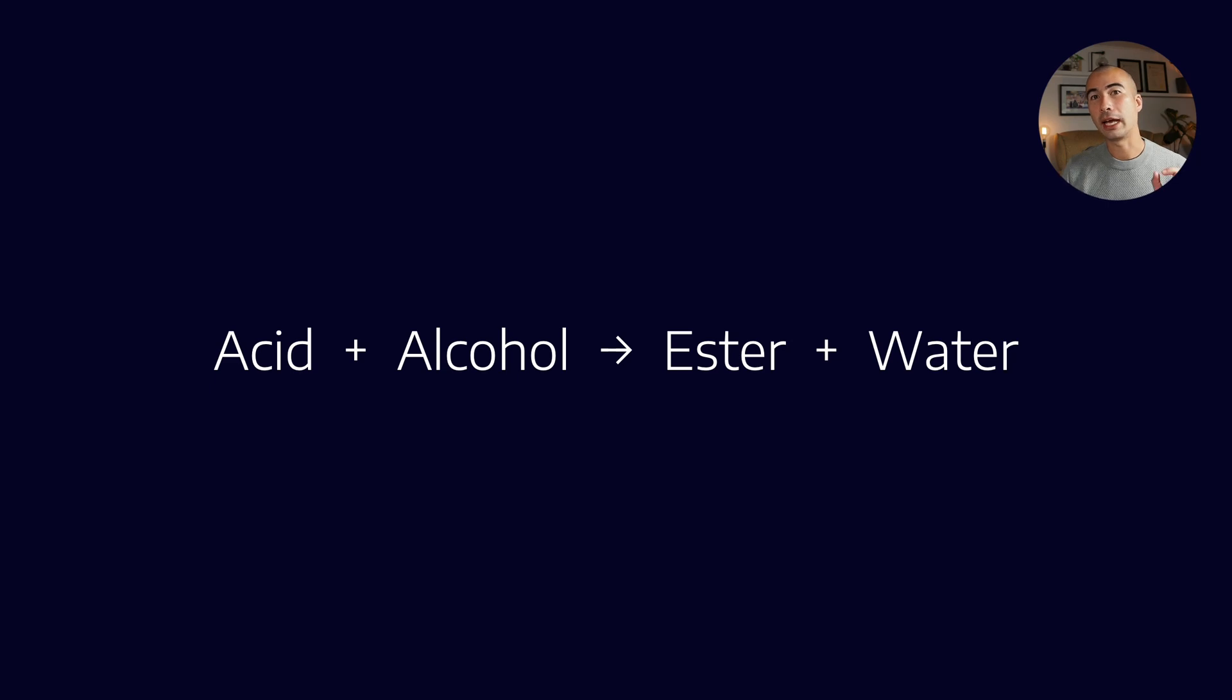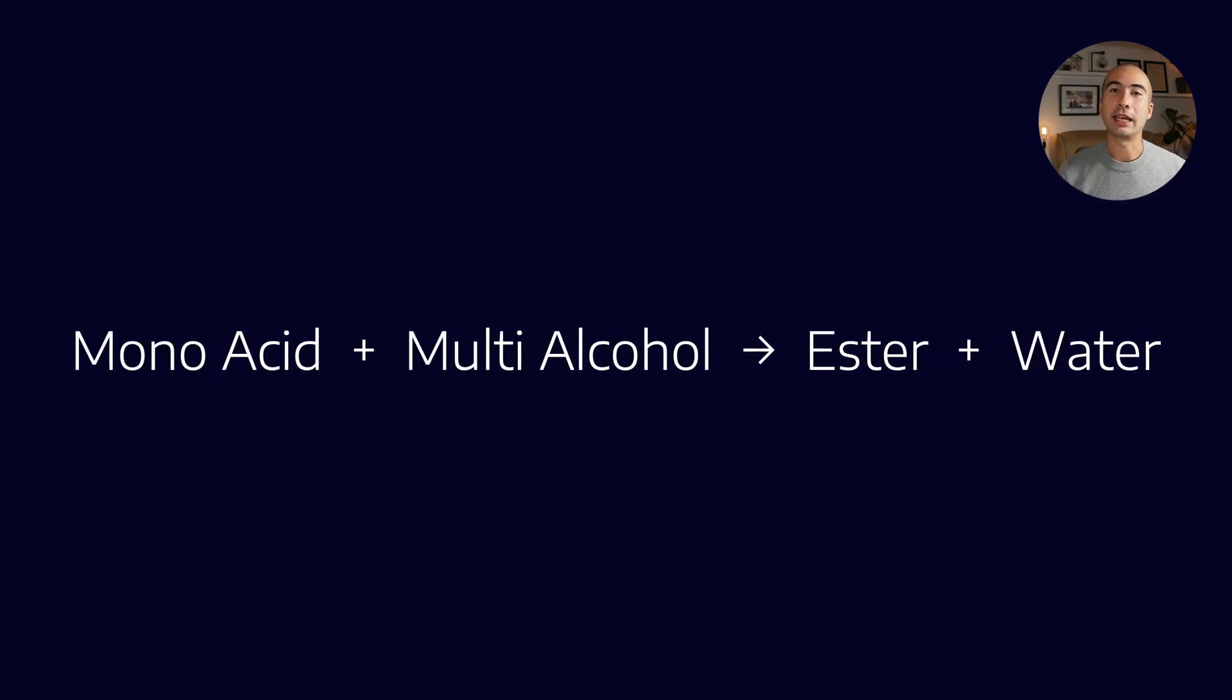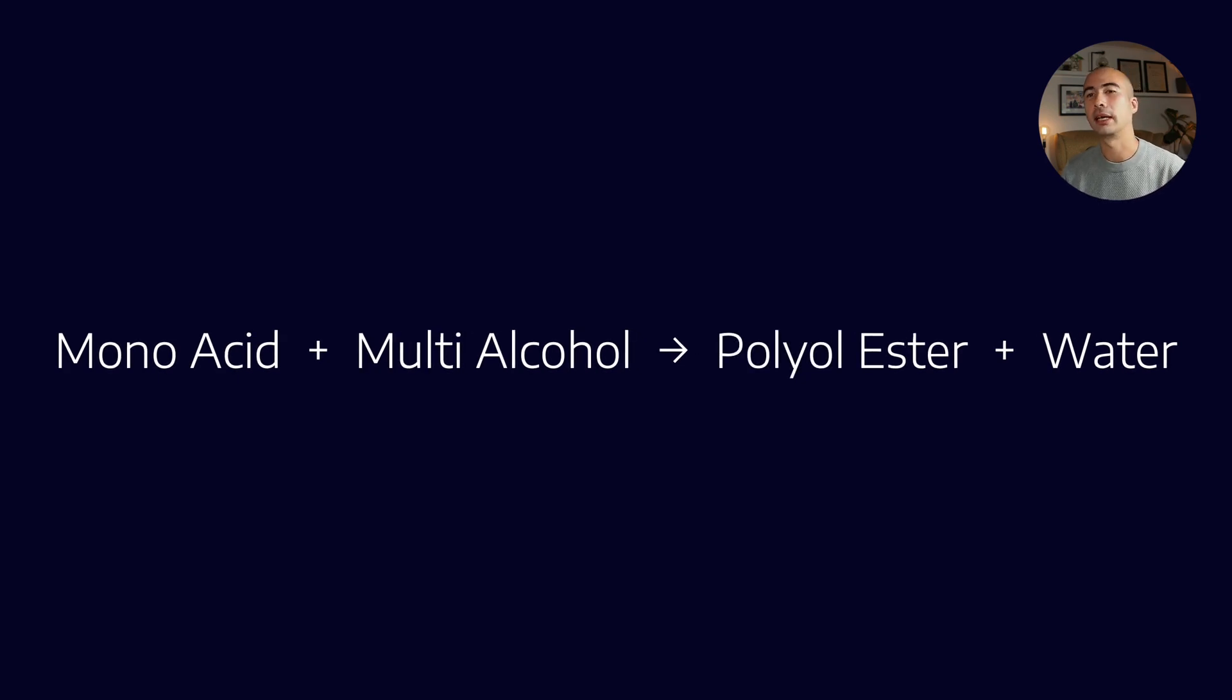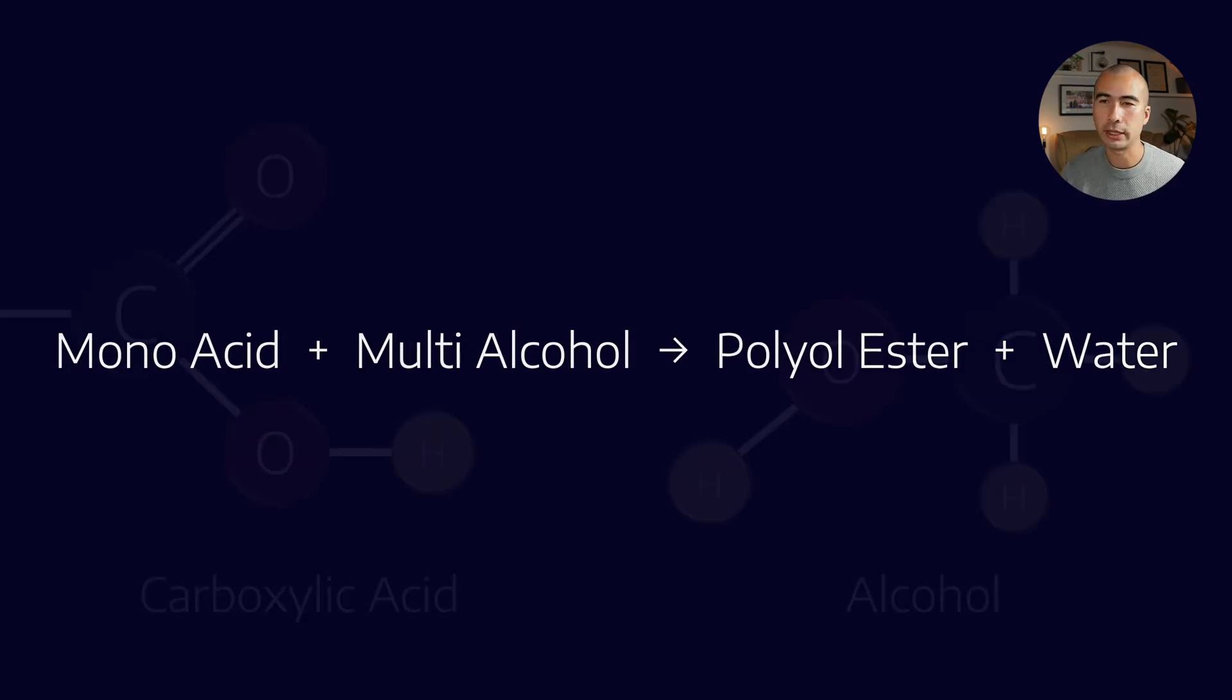Now when it comes to a polyol ester, how do we make that? We take a monoacid—an acid with a single acid functional group—and react it with a multi-alcohol, a molecule with multiple alcohol functional groups (the OH group). Out of that you get a polyol ester and water.